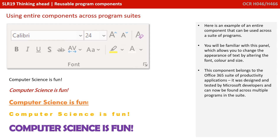Here's an example of an entire component that can be used across a suite of programs. You'll be familiar with this panel, which allows you to change the appearance of text by altering the font, colour, and size. This component belongs to the Office 365 suite of productivity applications. It was designed and tested by Microsoft developers, and can now be found across multiple programs in their suite.